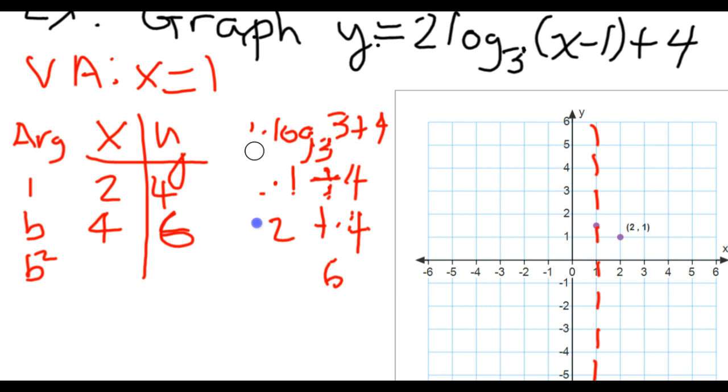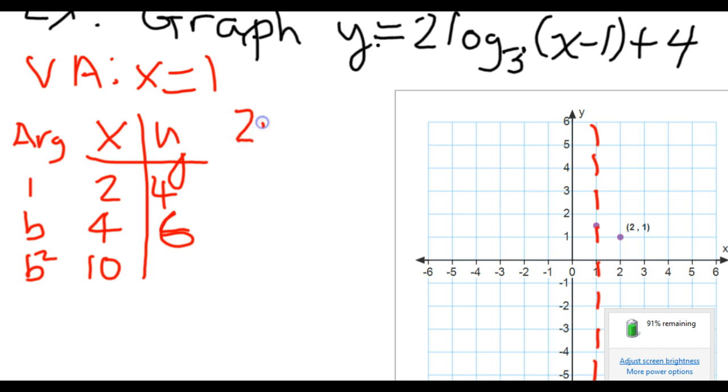And then lastly, I want to pick a value for X which makes my argument the base squared. Well, the square of 3 is 9. So I need to pick a 10 so that I get a 9. I would get 2 times log base 3 of 9 plus 4. When I do that, I'm going to get 2 times 2 plus 4, which ultimately gives me 8. So when X is 10, Y is 8.